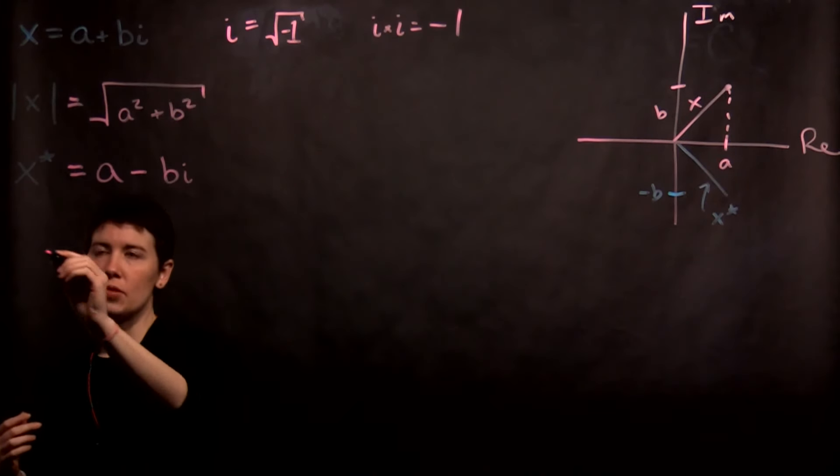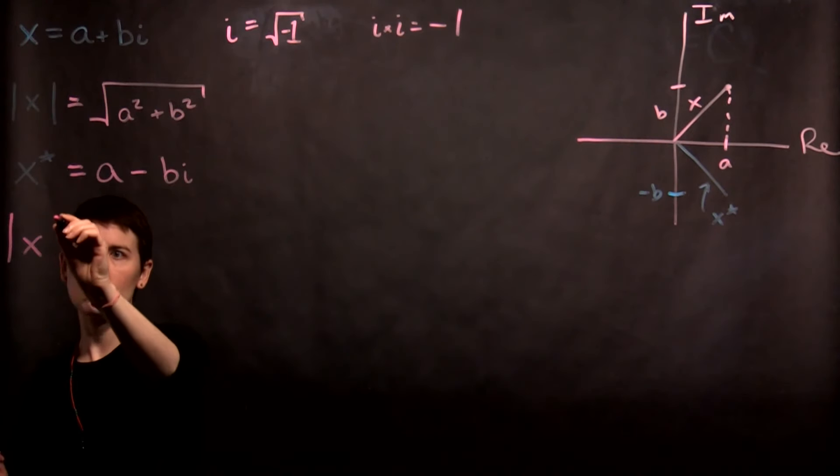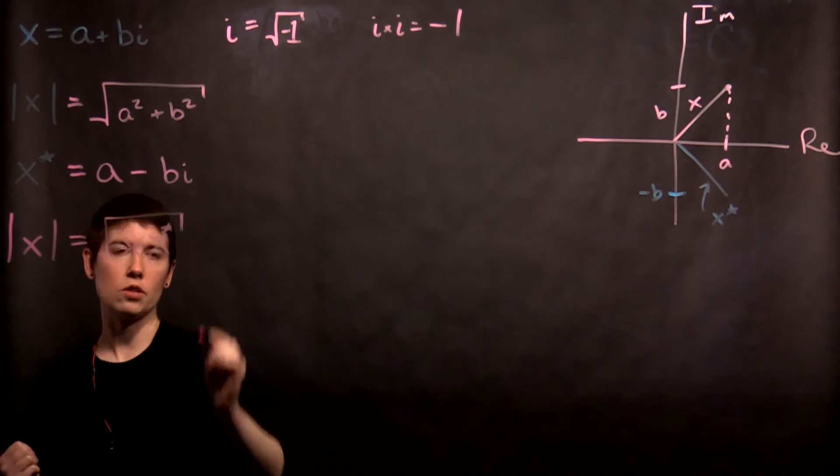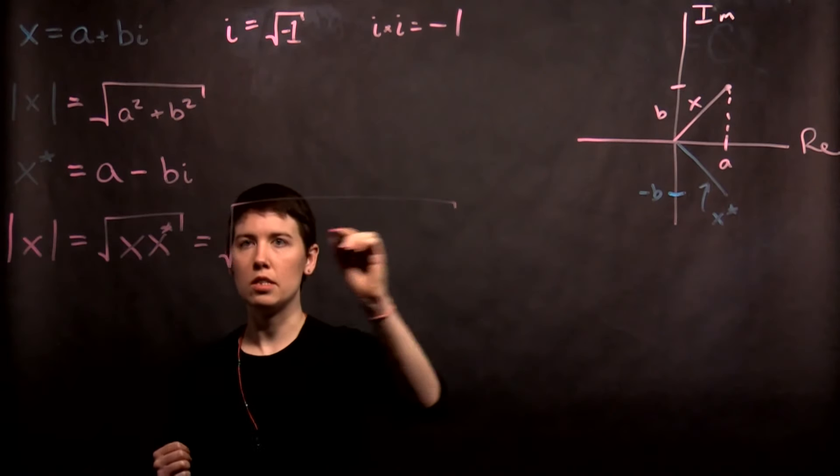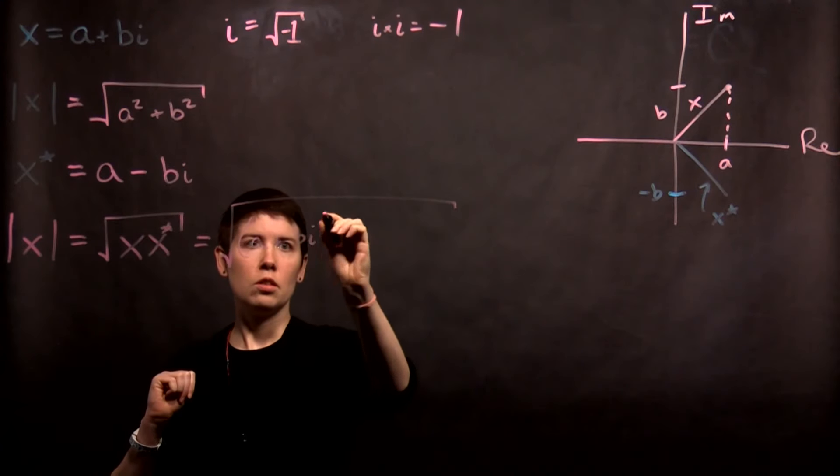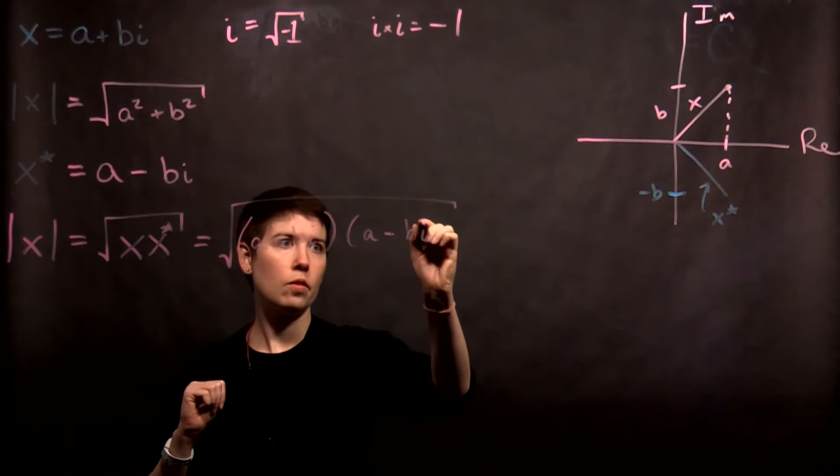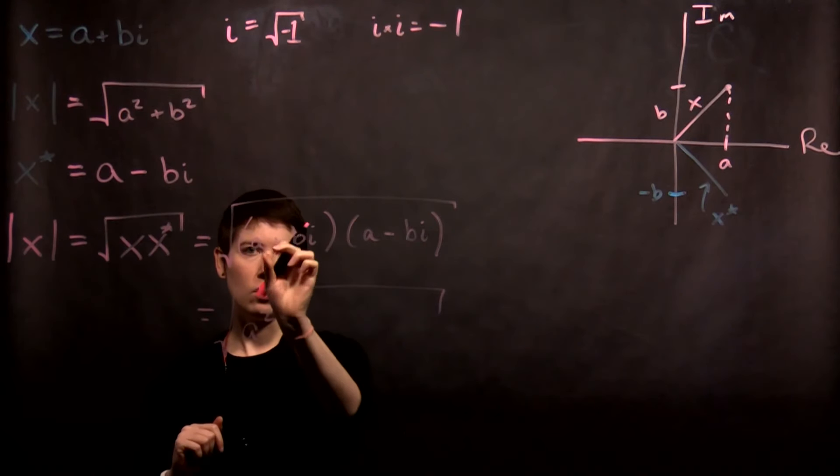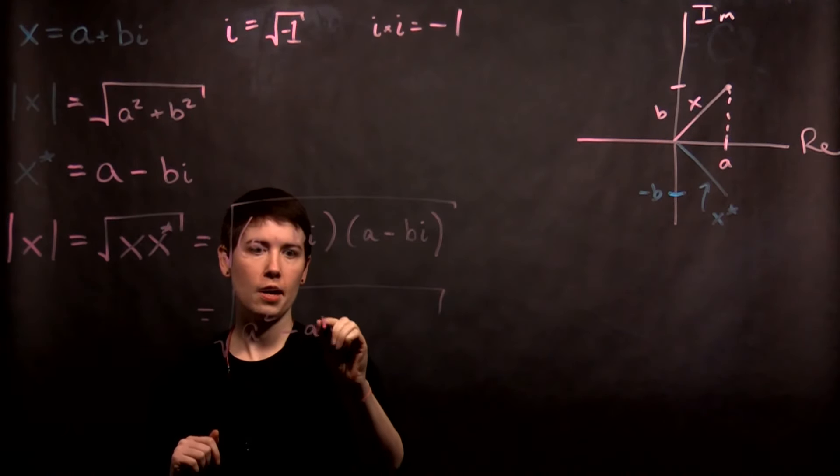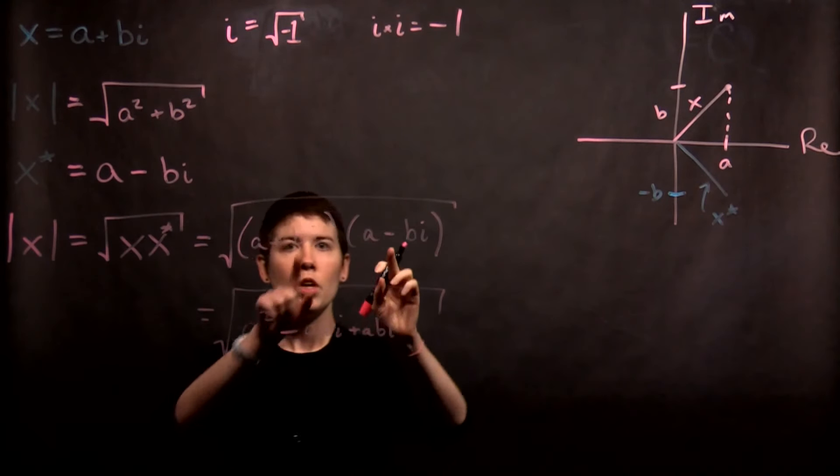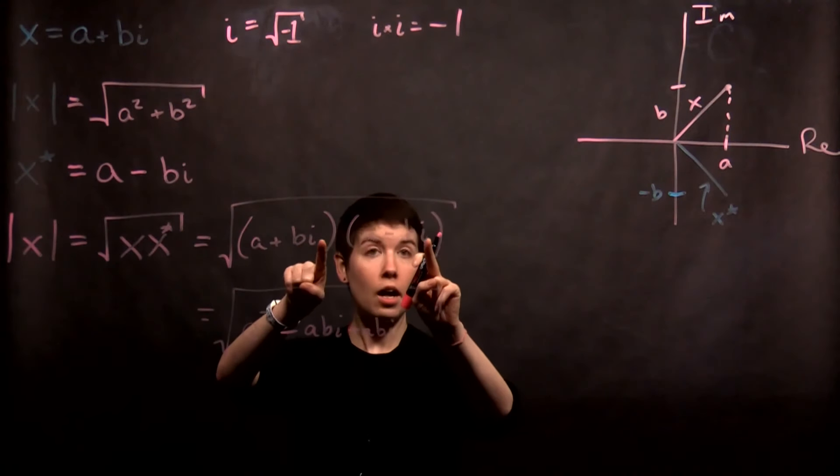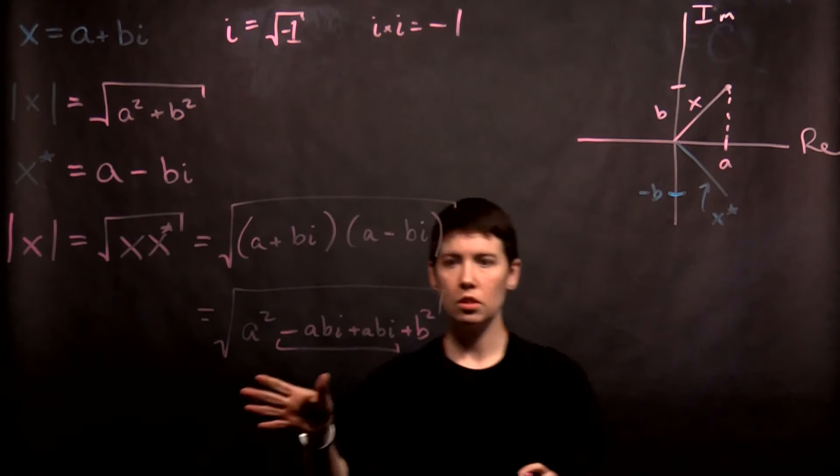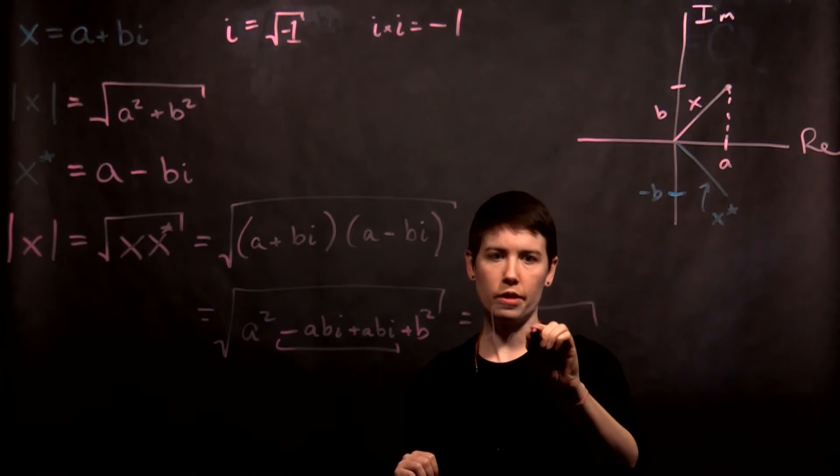What's nice about this is we can express the magnitude of x as the square root of x times its complex conjugate. If we think about that, what you have then is a plus bi multiplied by a minus bi. You'll have your a squared, and if I do this first one times the second one, minus abi plus abi, and then here we're going to have b squared with a minus sign and i squared. The i squared gives us negative one, so b squared. These two cancel, and we're left with the square root of a squared plus b squared.